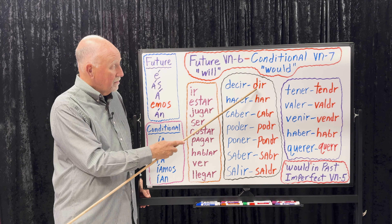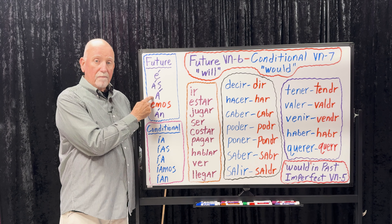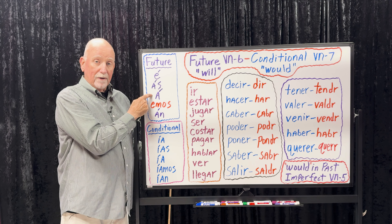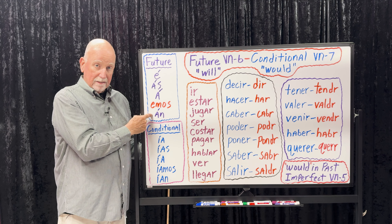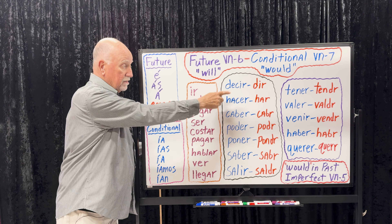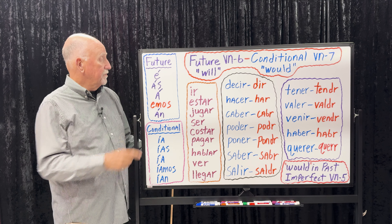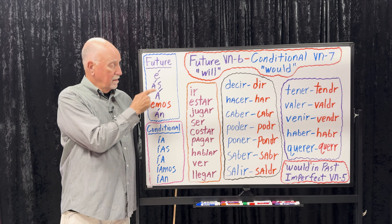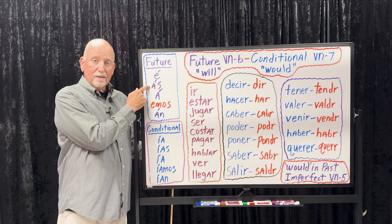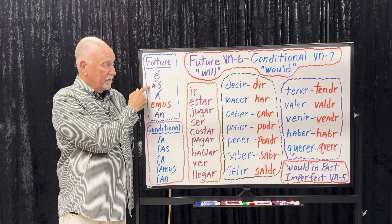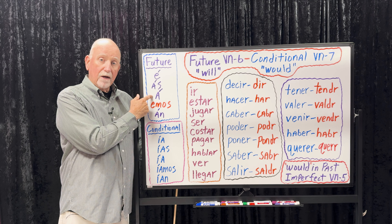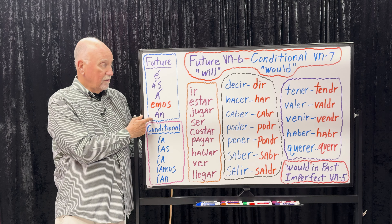Decir: take the stem DIR. 'What will mom say?' — ¿qué dirá mamá? 'Dad will say no' — papá dirá que no. 'They will say yes' — dirán que sí. 'She will tell the truth' — ella dirá la verdad. Hacer — to do or to make — stem HAR: 'I'll make a pie' — haré un pastel. 'Mom will make some cookies' — mamá hará unas galletas. 'You will do well on the test' — harás bien en el examen. Caber — to fit something into a box or suitcase: 'It will not fit' — no cabrá. 'They will not fit' — no cabrán.